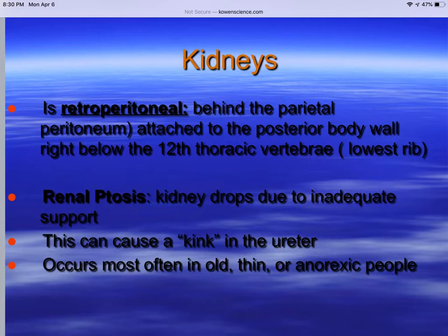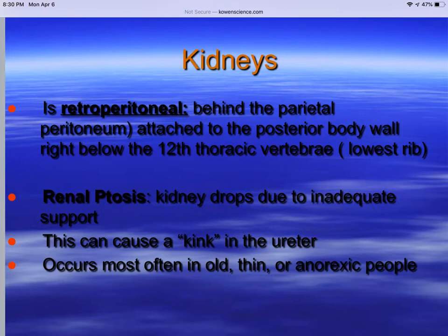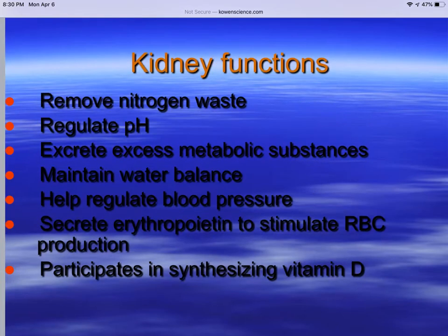Renal ptosis is when the kidneys drop due to inadequate support. It can cause a kink in the ureter. This typically happens in older individuals, individuals who are anorexic, or individuals who have lost a lot of weight — that peritoneal tissue is not holding the kidney in place tight enough. It's become loose because of that loss of weight, and then the kidney can float, move around, and can cause the ureters to kink up.